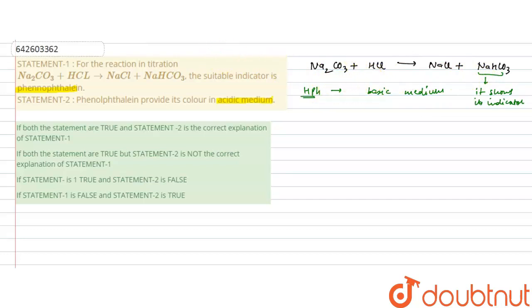If this reaction takes place in the presence of methyl orange indicator, which works in acidic medium, it will neutralize Na2CO3 to full extent. That is, it will form H2CO3, which further breaks into water and carbon dioxide.